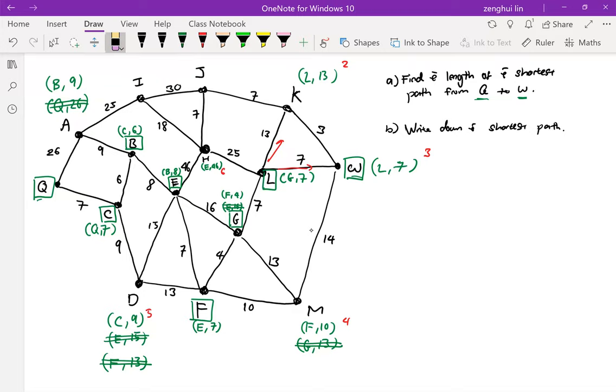All we have to do now is to plot the path backwards. So using this highlighter, I start at W. It tells me to go back to L. So I'm going to trace back to L. Once I reach L, it tells me to go to G. So go to G. G tells me to go to F. F. Go to E. Go to B. And at B tells me to go to C. At C to Q. And that's it.